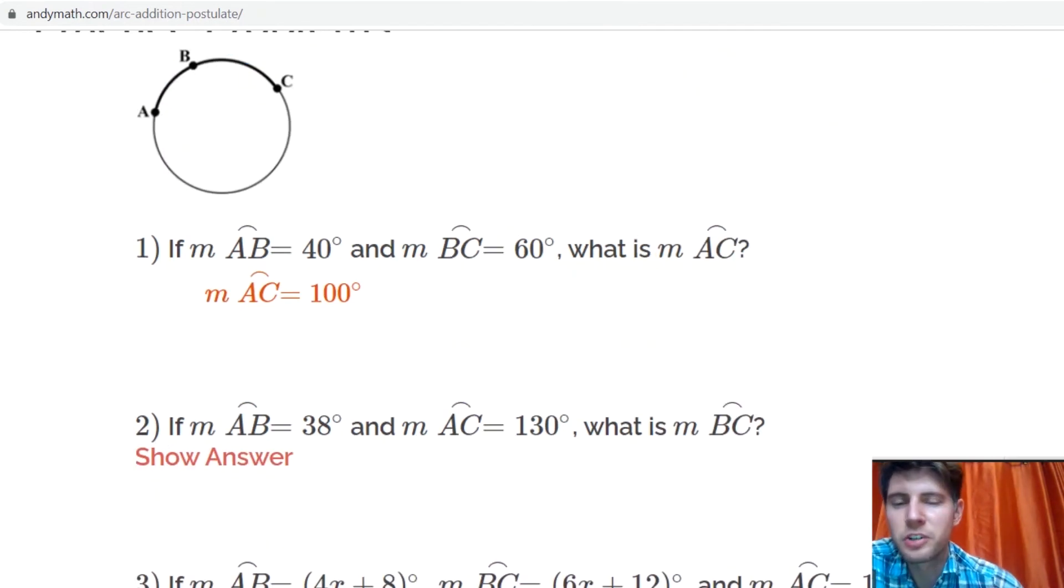Number two. So for number two, it's slightly different. They're giving us that AB is 38 degrees, so we know this guy right here is 38 degrees. And AC, the big one, A to C is the larger one, we know is 130 degrees.